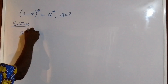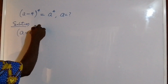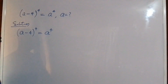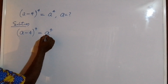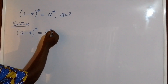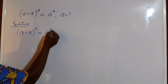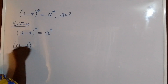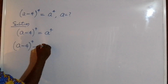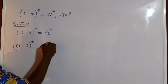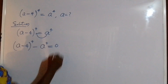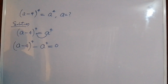The equation is: (a minus 4) to the power of 4 equals a to the power of 4, because our aim is to find the value of a. What I'm going to do is transfer a to the power of 4 to the left, so I have (a minus 4) to the power of 4 minus a to the power of 4, and having moved this to the left, everything equals zero.